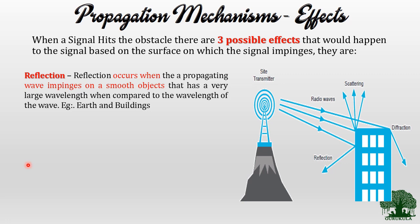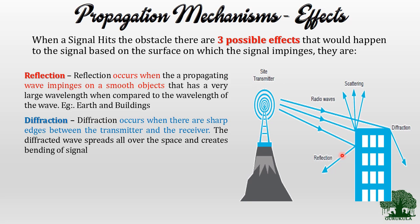Reflection occurs whenever my signal is impinged on smooth or large surfaces — large in terms of wavelength. If the surface's dimension is much larger compared to the wavelength of the signal, then the signal will get reflected back. This is one of the propagation mechanisms.